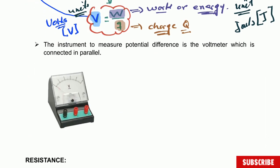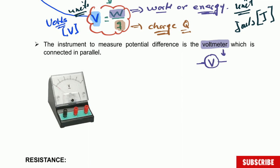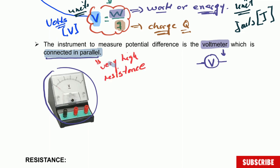We carry on about potential difference and we're going to speak about the instrument. The instrument used to measure potential difference is the voltmeter. The symbol for the voltmeter is a V in a circle with two lines. This is always connected in parallel — always connected in parallel — because it has a very high resistance. That is the reason why we connect it in parallel.